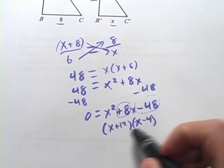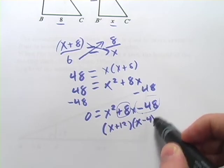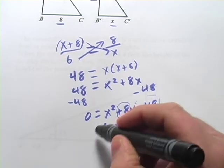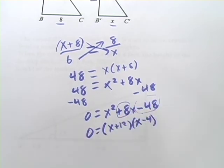If you're not sure that the factors are right, foil that together and see if you get this. I think you will. Now, these factors still equal 0.